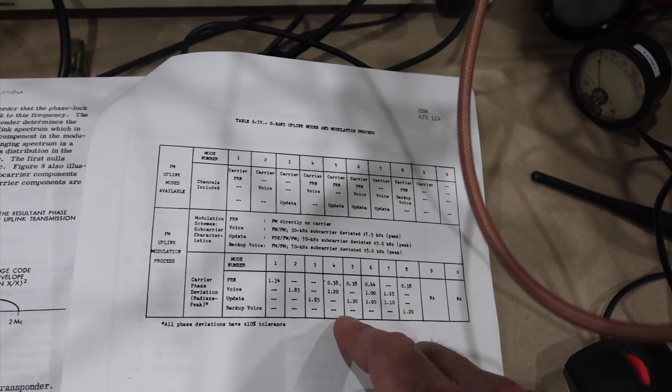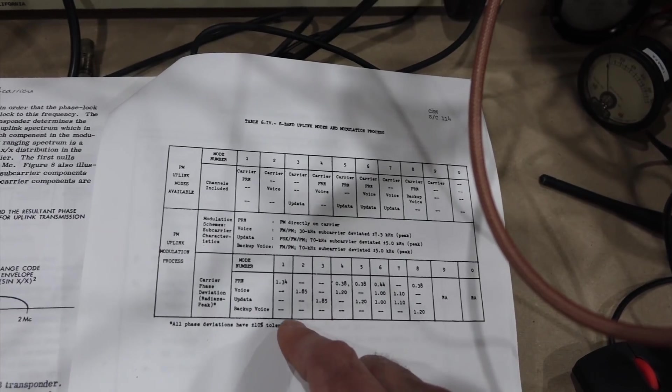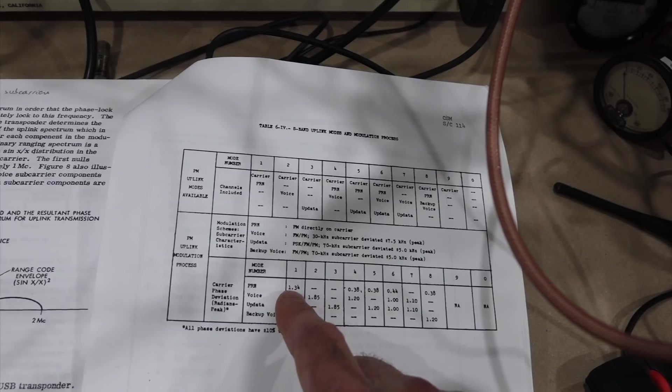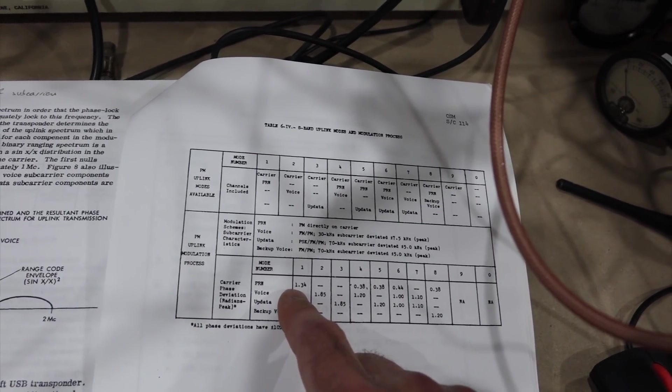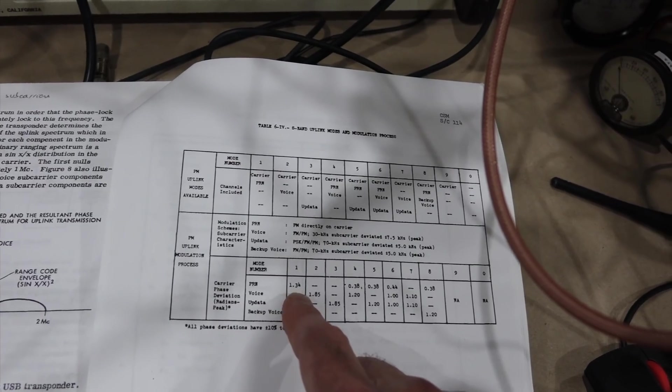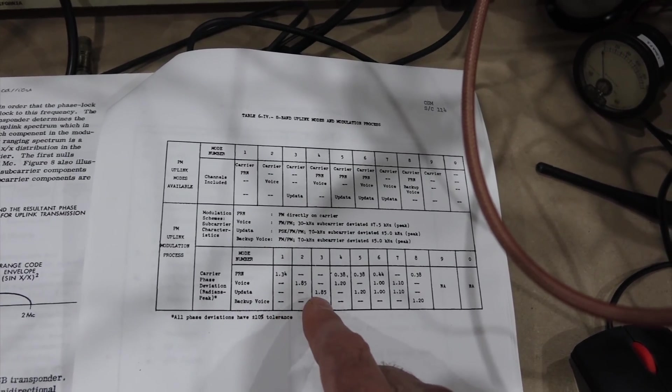And right now I am on this mode where I do ranging and voice and data at the same time. And ranging gets this weight of phase modulation, 0.44, and both voice and data get one. But they optimize their signal-to-noise ratio all the time. Like for example, if they are only doing ranging, when they are just acquiring, they'll just allocate everything to it.